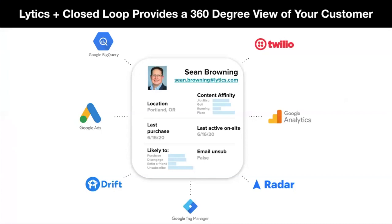With that information, we're pulling in all the different data sources. We want to provide that full 360-degree view of your customer — pulling in offline data, online data, and all these different places to understand who is the person behind the data. Where are they located? What content do they have affinity with? Are they likely to purchase? Are they likely to be engaged or not? You'll have a much better picture of who the person is behind the data, so you can understand more about their life cycle and predict their patterns to serve a more personalized experience.